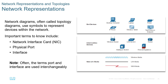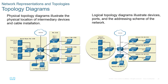Let's look at how we represent a network. There are two main ways: physical or logical. The physical topology illustrates the physical location of intermediary devices and cabling, while the logical topology illustrates devices, ports, addressing, and the more logical structure of the network. Both are equally important and both are typically done — when I do network design, I include both in my network documentation.